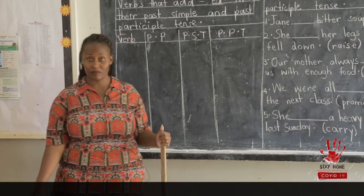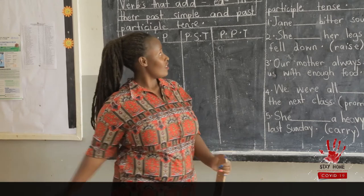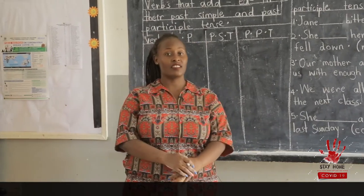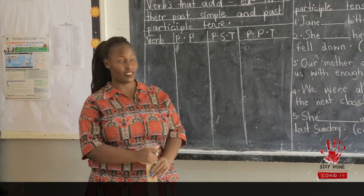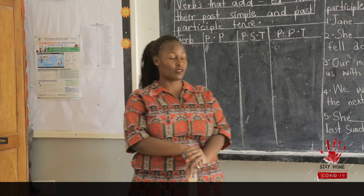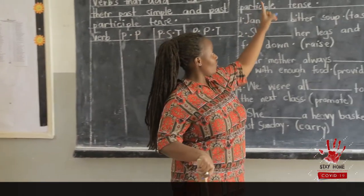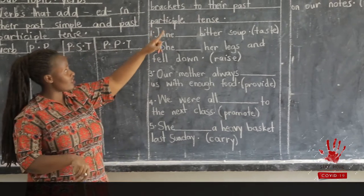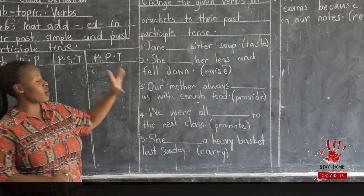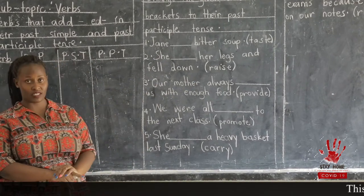Hello children, welcome back to the English lesson. We last talked about verbs that add D and IED in their past simple and past participle. So I left you with the exercise: change the given verbs in brackets to their past participle, and we were looking at whether we were supposed to add D or IED to the given words in brackets.